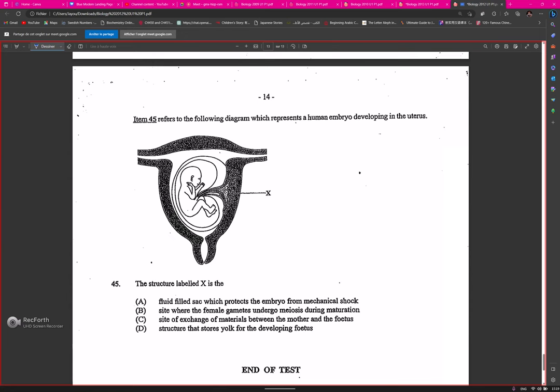Question forty-five: the structure labeled X is? It can't be that. A would be the fluid-filled sac which protects the embryo from mechanical shock. The amnion, the site where female gametes undergo meiosis during maturation happens in the ovary. The structure that stores yolk for developing fetus is interesting from a mammalian perspective. C would be the answer. That is the end of 2012's biology paper.